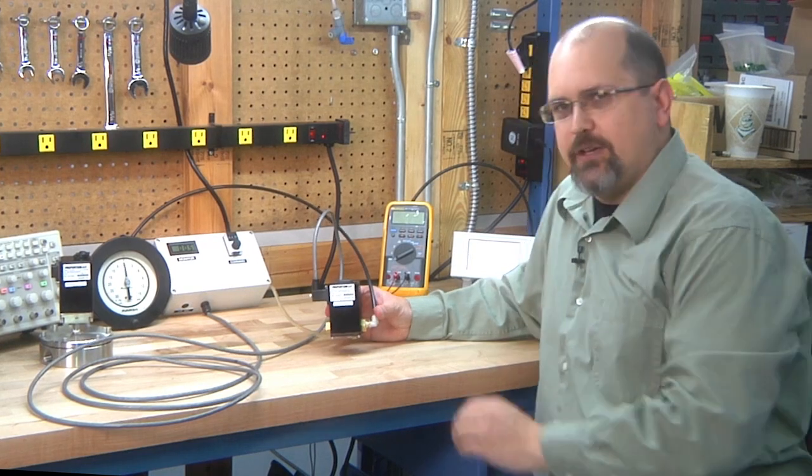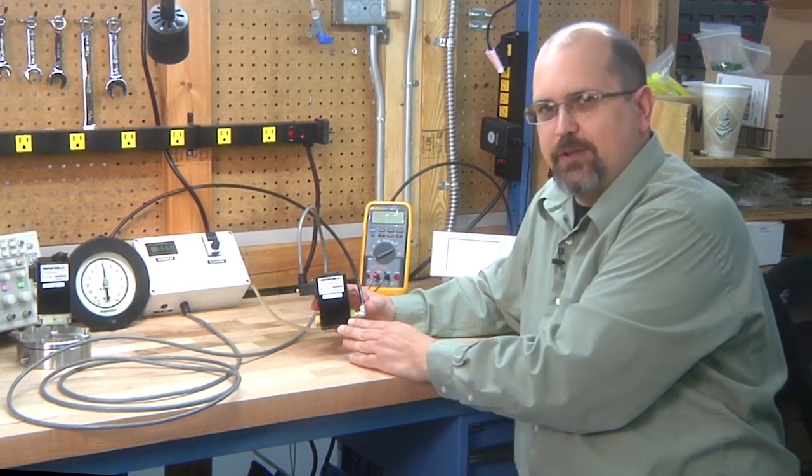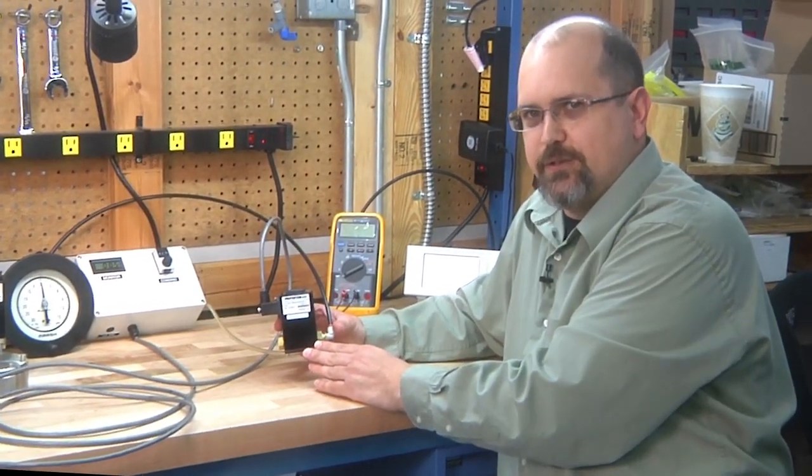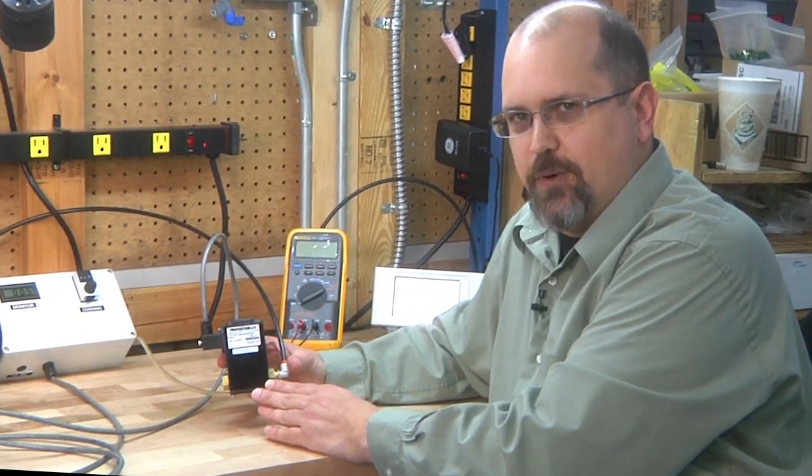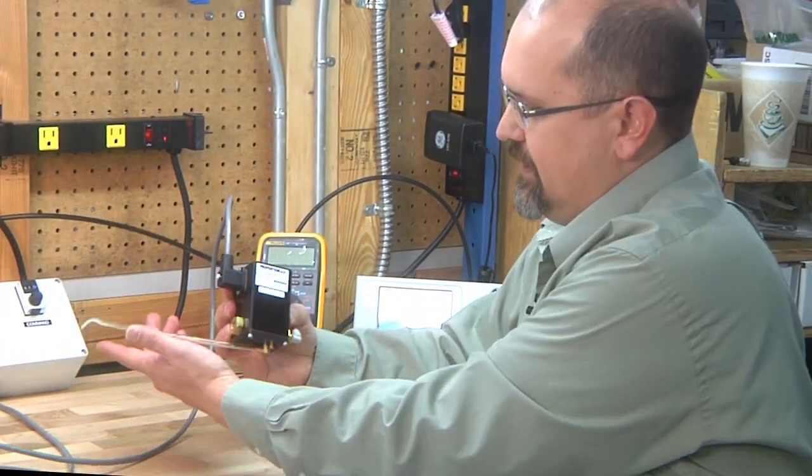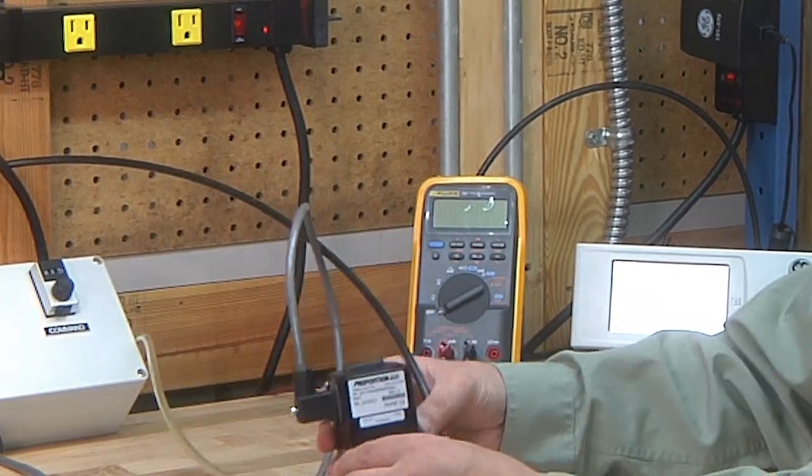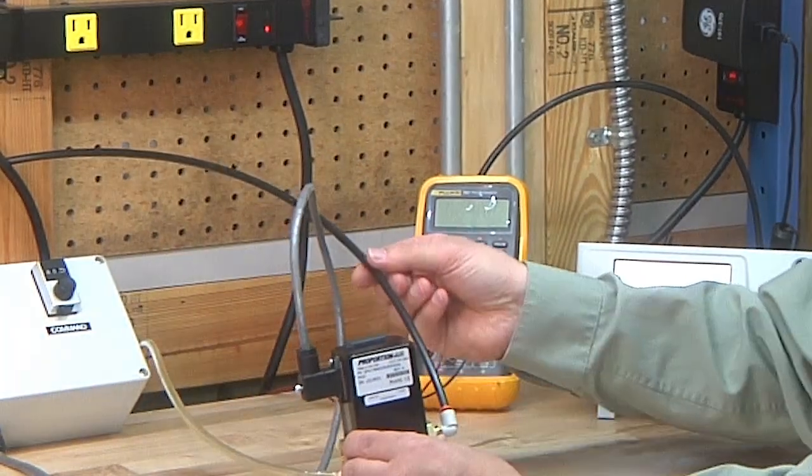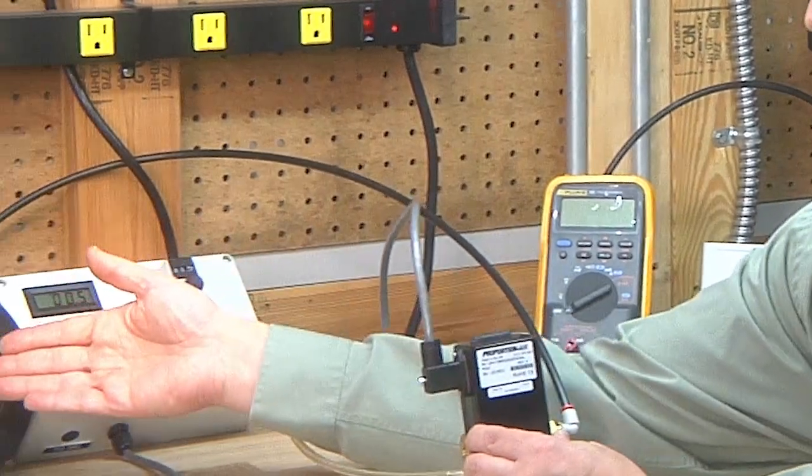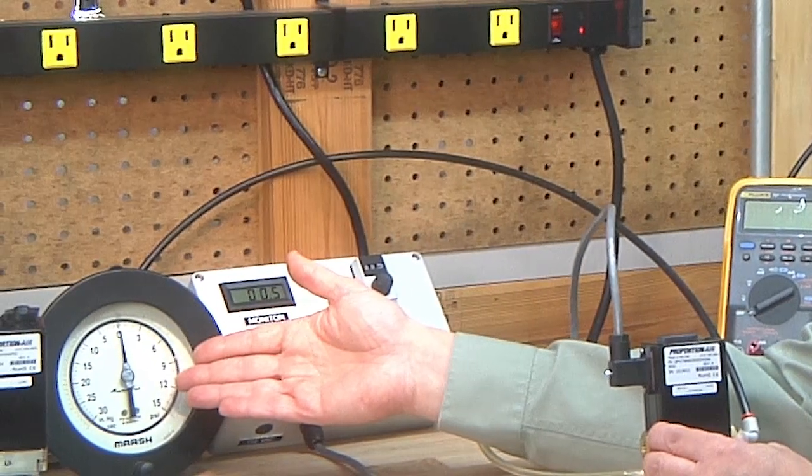This electronic vacuum regulator is designed for very low flow applications where high resolution or high accuracy is required. It operates with a supply vacuum from a vacuum pump or vacuum source. The controlled output pressure port in this case is going to be displayed on this mechanical gauge.